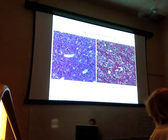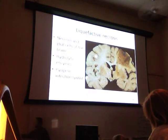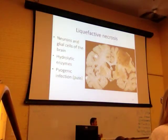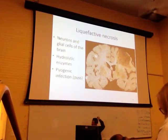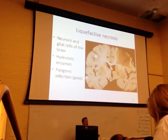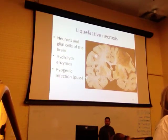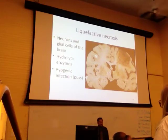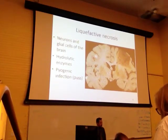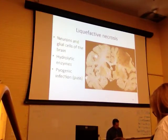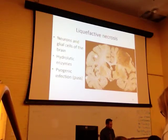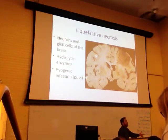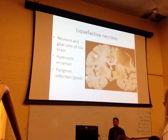The second type of necrosis is liquefactive necrosis, which targets organs like nervous tissue — the brain, neurons, and glial cells. Liquefactive necrosis is named such because brain cells are very high in hydrolytic enzymes, and the brain itself has very little connective tissue. Digestion starts taking place as those hydrolytic enzymes get freed up.